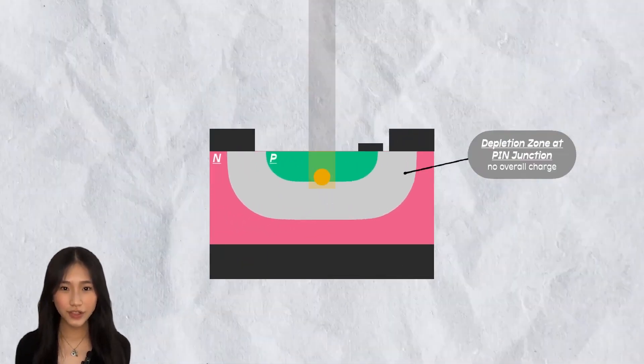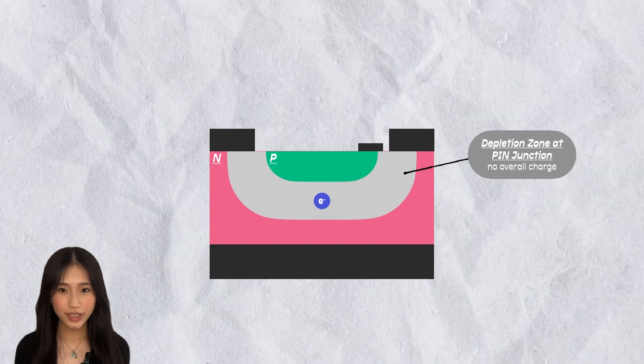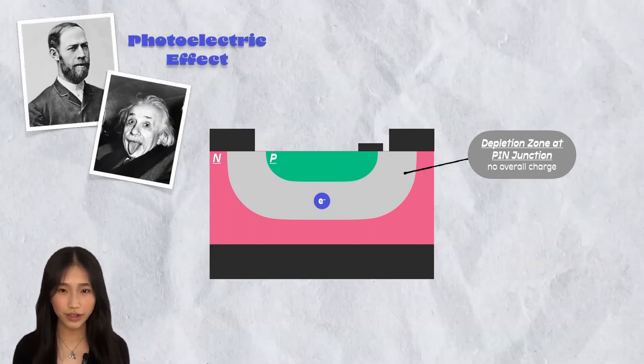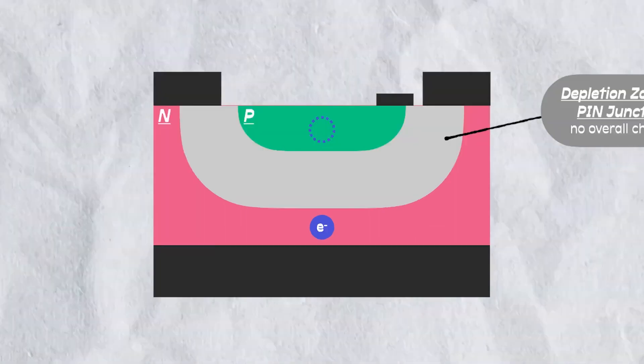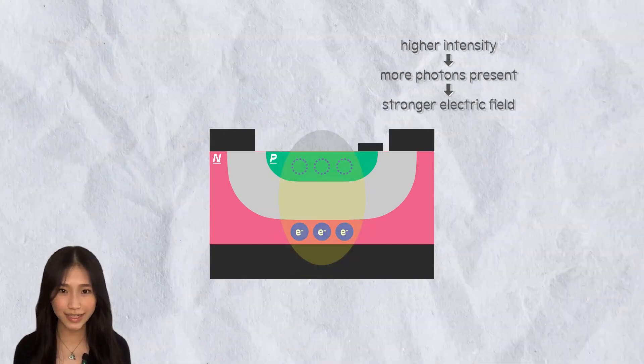When a photon of light strikes, it transfers its energy to an electron by the photoelectric effect. It moves to the N side and leaves a hole. This electron-hole pair increases the strength of the electric field across the gap. Its strength is proportional to the incident light intensity.